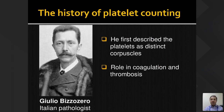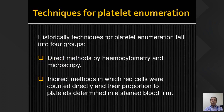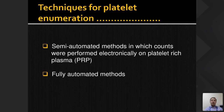Historical techniques for platelet counting fall into two forms: direct methods by hemocytometry — placing on a Neubauer chamber under a microscope — and indirect methods, where red cells were counted in proportion to platelets on a stained blood film, which many still do today. Other methods included semi-automated methods requiring platelet-rich plasma, and fully automated methods which we use nowadays.